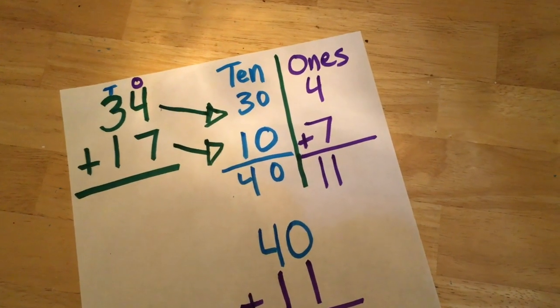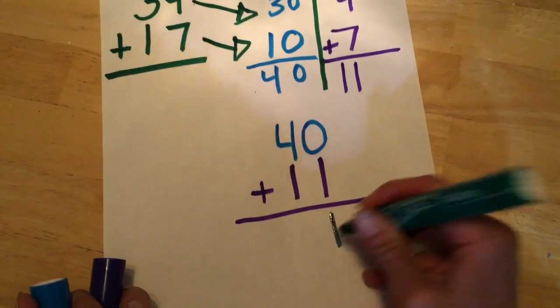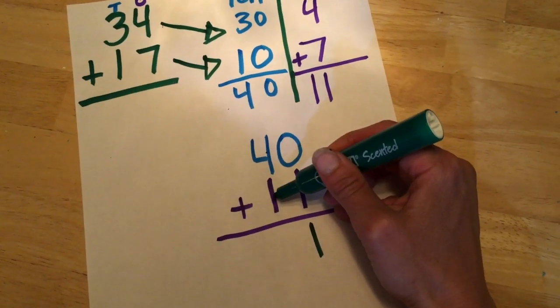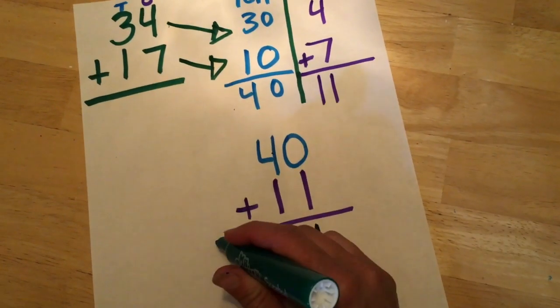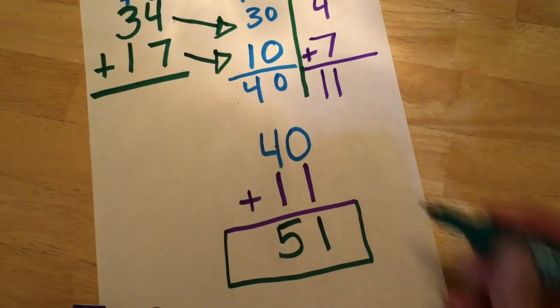Zero plus one is equal to one. And four plus one is five. So now we have the number 51.